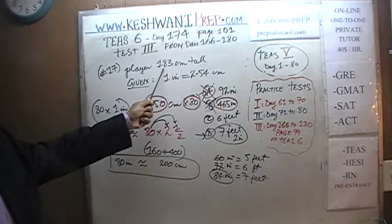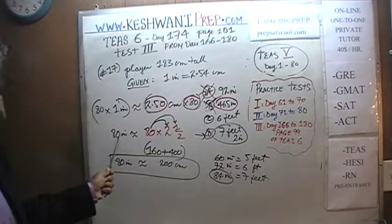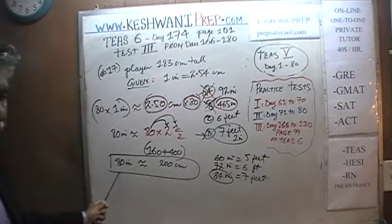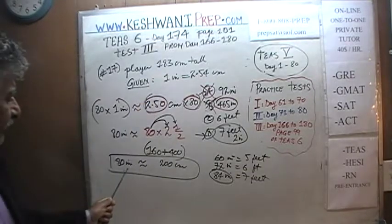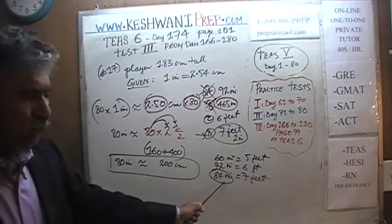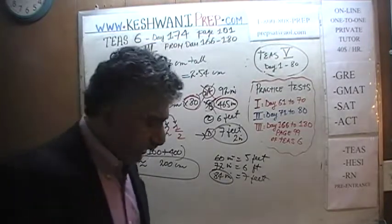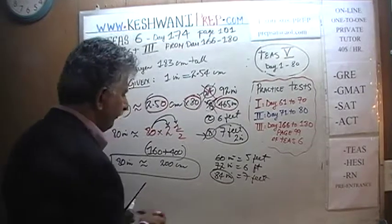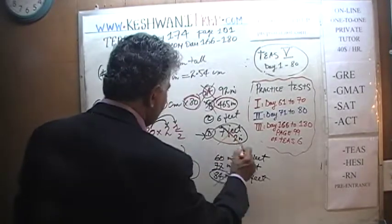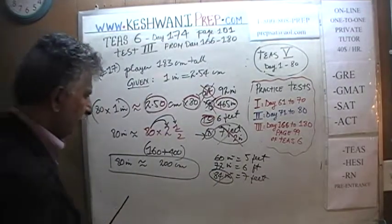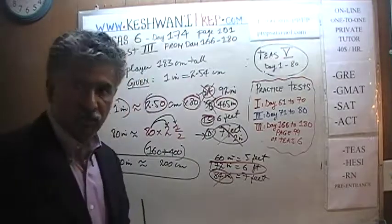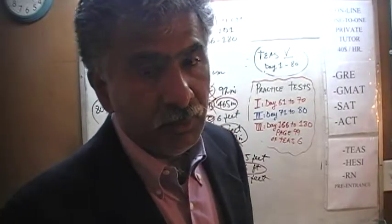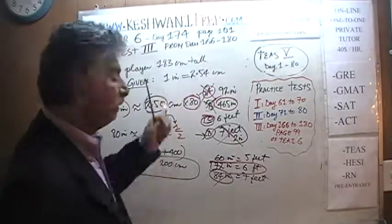This guy is only 183 centimeters — he doesn't even come close to 80 inches. He's only 183 centimeters, which means he's not even 80 inches, let alone 84 inches. 84 inches would have made him 7 feet tall — he's not 7 feet tall. The answer is C, and C is 72 inches. If you like, we can do it out and confirm that 72 inches is approximately 183 centimeters.